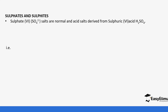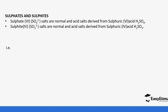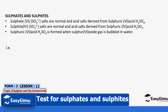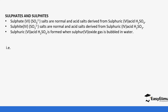Sulfate is written as SO₄ with a charge of two minus — a normal and acid salt derived from sulfuric acid (H₂SO₄). Sulfite, written as SO₃ with a charge of two minus, is derived from sulfurous acid (H₂SO₃). Sulfuric acid is formed when sulfur trioxide (SO₃) is bubbled in water, and sulfurous acid comes from sulfur dioxide (SO₂) reacting with water.